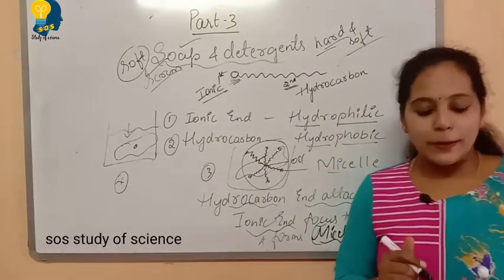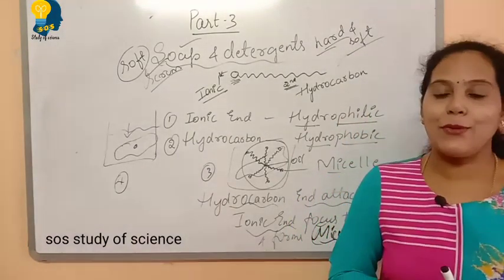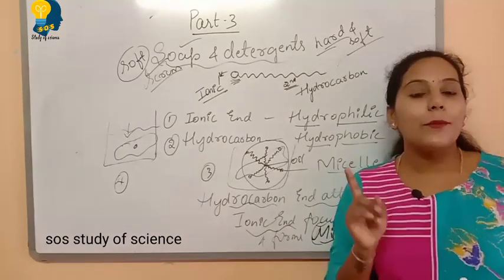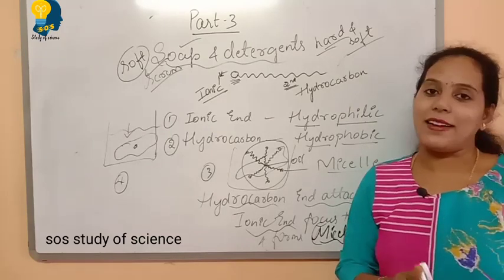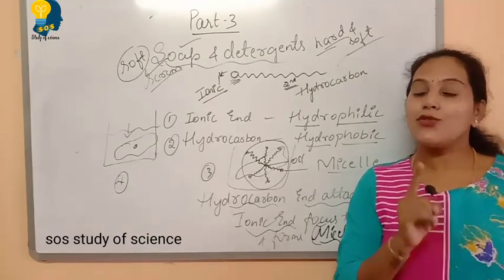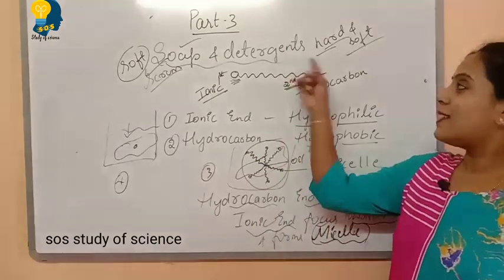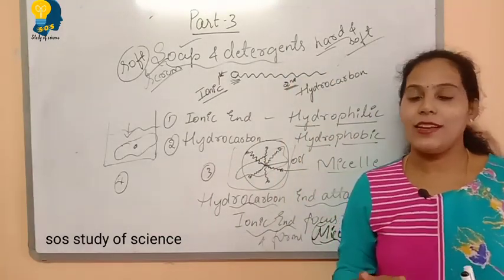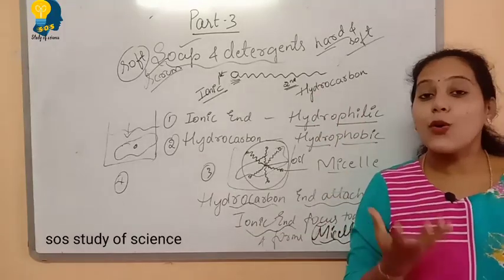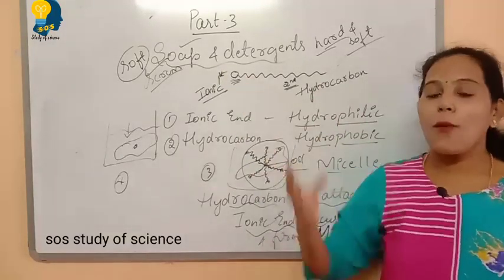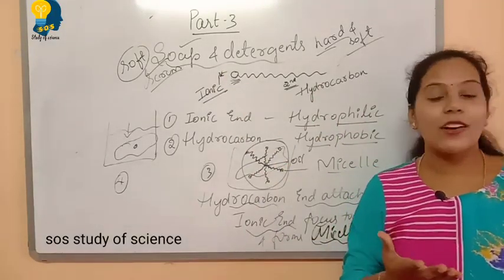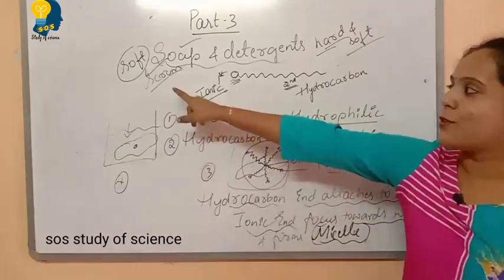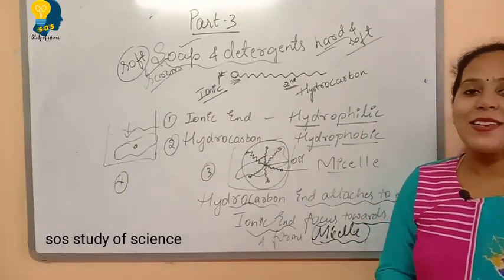Regarding detergents — detergents are sodium salts of sulfonic acid or the ammonium salts of chlorides or bromides. Soaps work well with soft water only and form lather with soft water. When soap reacts with hard water, it will not form lather — instead it forms scum. Detergents work well with both hard water and soft water and form lather with both.